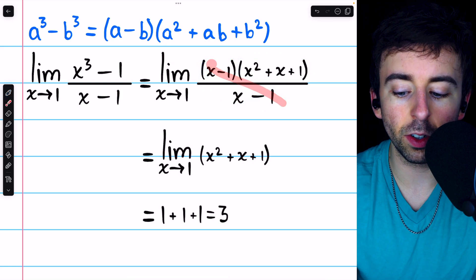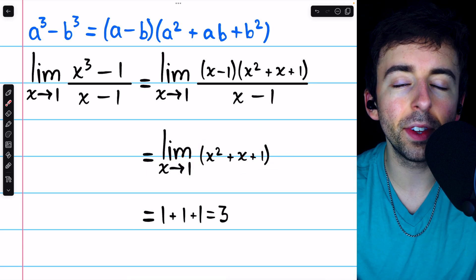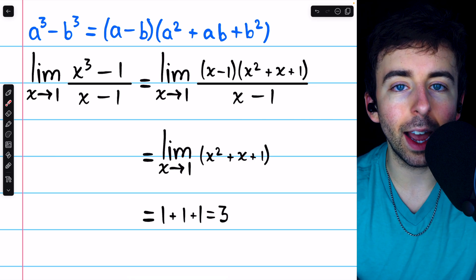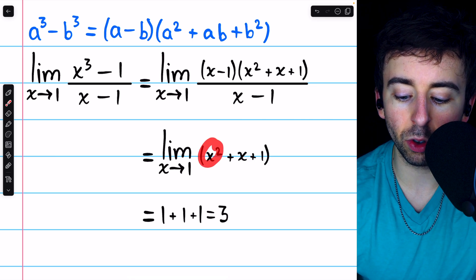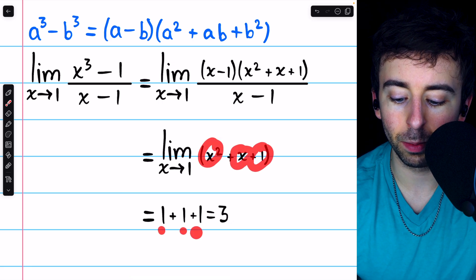So after cancellation, we're left with the limit of x squared plus x plus 1 as x approaches 1, and this can be evaluated directly by substitution. Plugging in x equals 1, we have 1 squared, which is 1, plus 1, so plus 1, and plus 1. So the value of the limit then is 3.